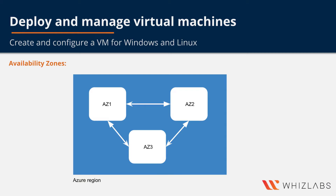Each availability zone is made up of one or more data centers and is equipped with a distinct power source, network, and cooling. It is logically separated from the other availability zones within the Azure region, but note that even though they are logically separated, they still have network connections between the availability zones.